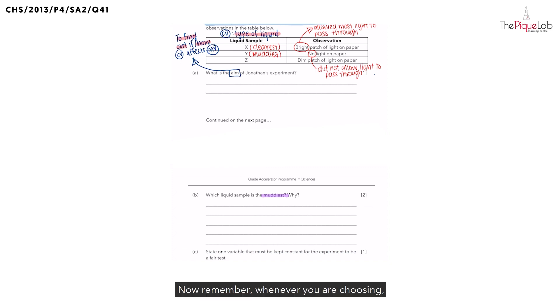whenever you face a choosing question, you need to use the CUE template, the choosing template. So what does the CUE template refer to? It refers to choose, use data, and explain.